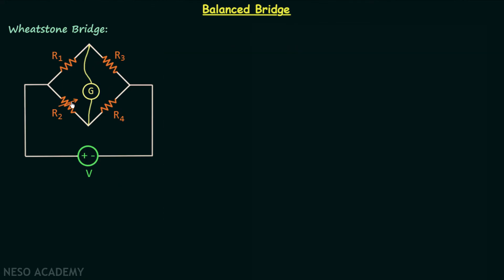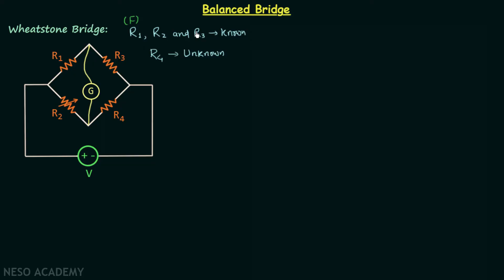In this bridge we have 4 resistors, 1 galvanometer and 1 voltage source. Out of 4 resistors, R1, R2, and R3 are the known resistors, and the 4th resistor R4 is an unknown resistor. R1 is the fixed resistor, R3 is also a fixed resistor, but R2 is the variable resistor — we can adjust the value of R2, and this is important because we want to calculate the value of the unknown resistor R4.